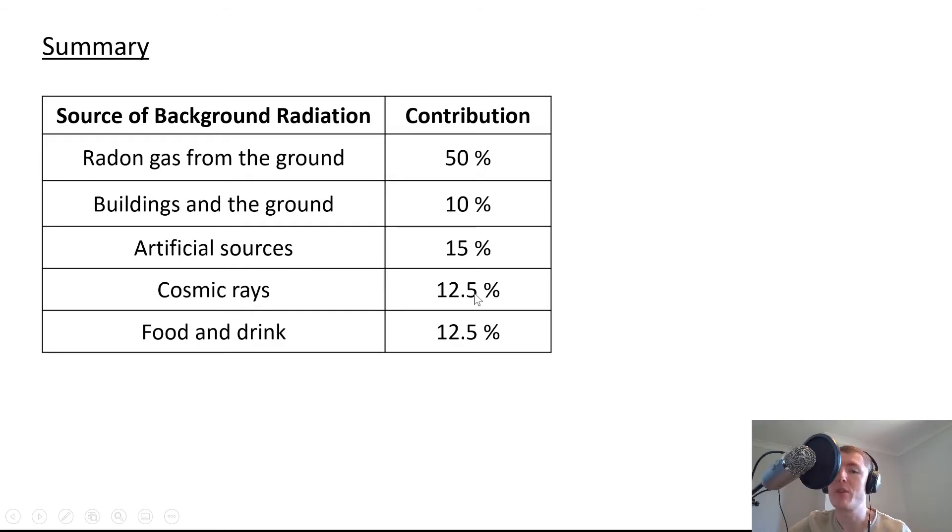Cosmic rays accounts for about 12.5%. And lastly, food and drink, again about 12.5%. So it's a good idea for you to remember a few of these sources of background radiation and their percentage contribution.